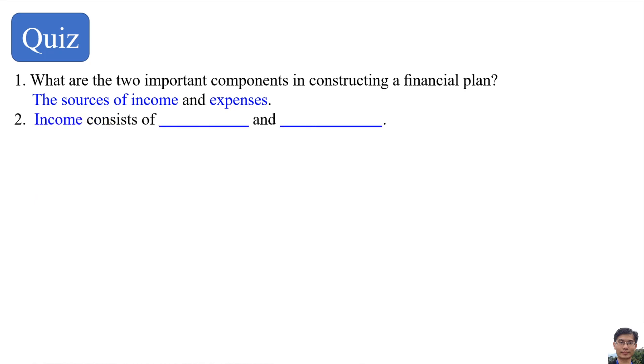Question number two. Income consists of active income and passive income. Question number three. Both active income and passive income are cash inflows.